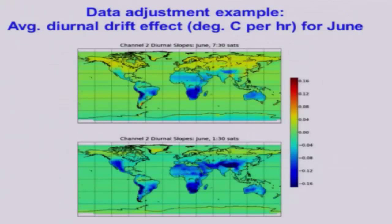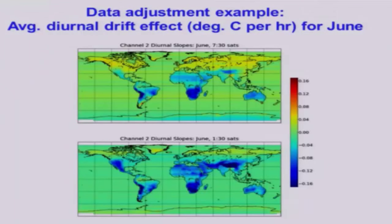This is the average diurnal drift effect we get from the satellites themselves, by comparing a satellite that's drifting with one that's not drifting. The blue areas show, for instance, a tenth of a degree C cooling per hour as the satellite drifts. There are two plots because there are satellites nominally at 7:30 a.m. and p.m., and then the bottom plot is for satellites nominally at 1:30 a.m. and p.m. for their observation times. We subtract this out of the satellite data as the satellites drift through time.